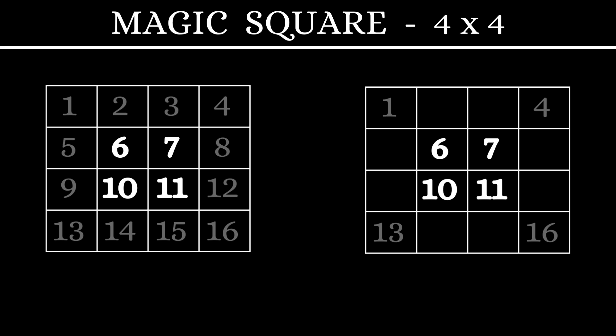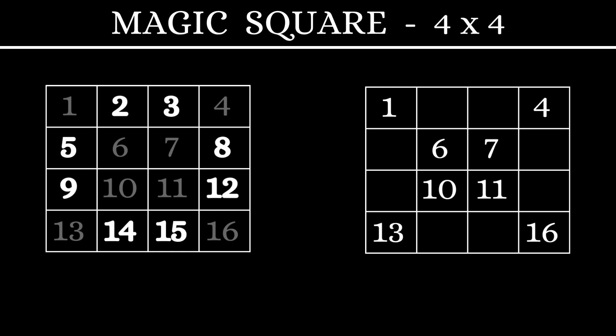The remaining numbers need a small rearrangement. Let's take these two numbers, 2 and 3. Instead of writing it here, we'll put it in the opposite side but exchange their positions. So, 3 comes here and 2 comes here. Next,